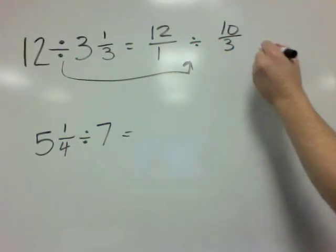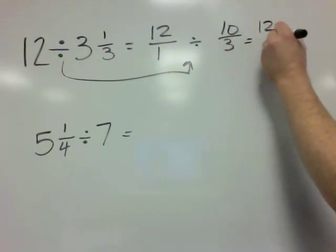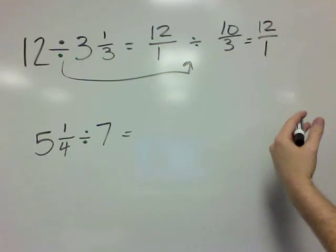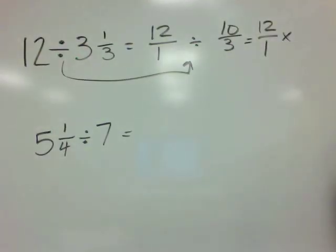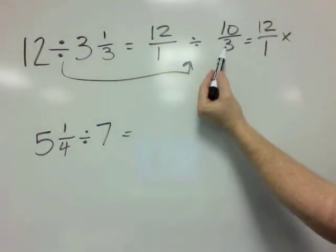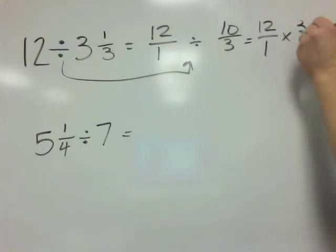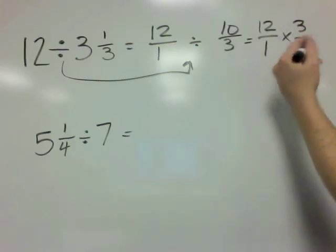And then you multiply by the reciprocal of the second fraction. So 12 stays as 12 over 1, the division turns to multiplication, and that 10 over 3 becomes 3 over 10.